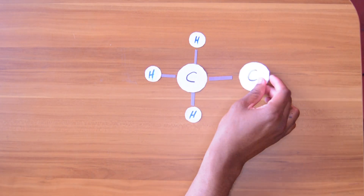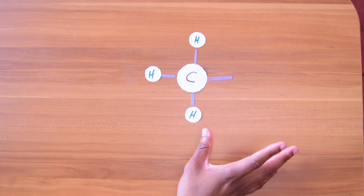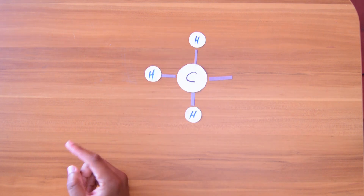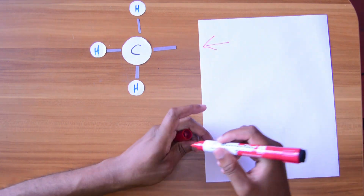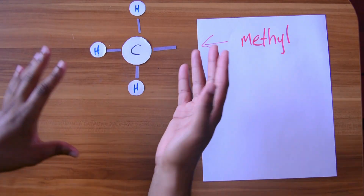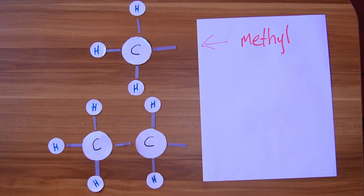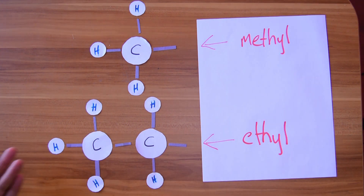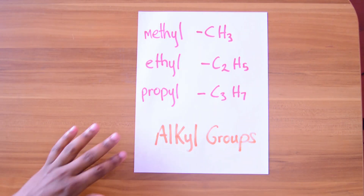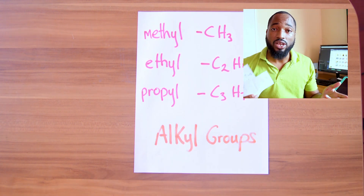This little hydrogen-carbon piece that I cut out and attached to another carbon — there's a name for this. This is called methyl. If we cut off a bigger piece of the hydrocarbon tail, we call it ethyl. And even bigger would be propyl. So methyl, ethyl, propyl — these are the alkyl groups. Knowing the names of these little pieces will be useful when you're naming isomers.